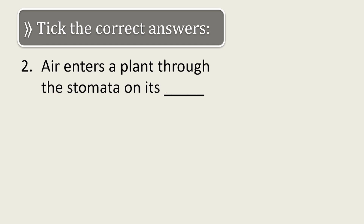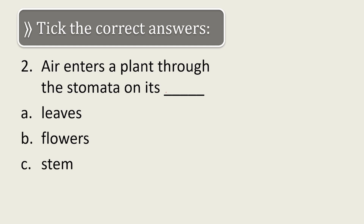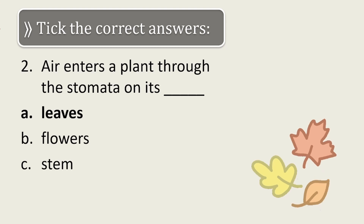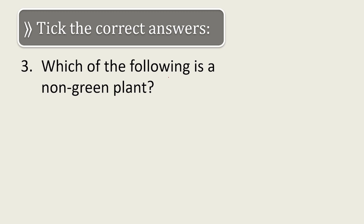Next question: air enters a plant through the stomata on its dash. The options are: leaves, flowers, stem. The correct answer is leaves. In plants, just like human beings and any other animal, they also need air to breathe, and they breathe through stomata. So leaves is the correct answer.